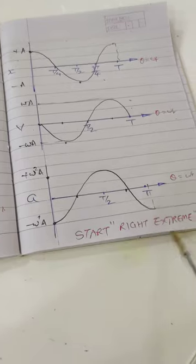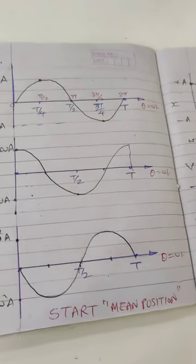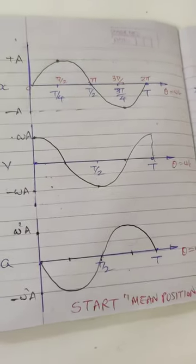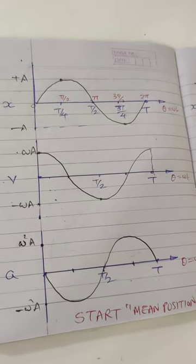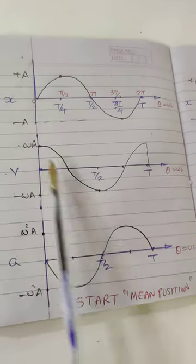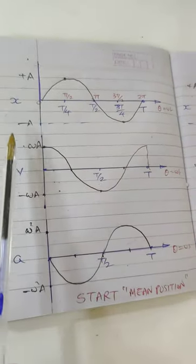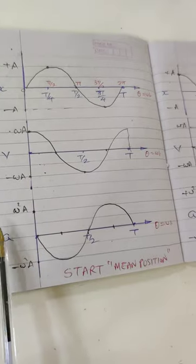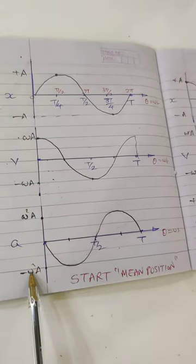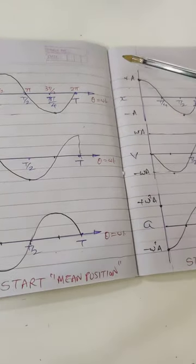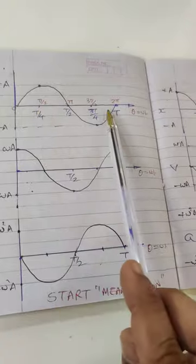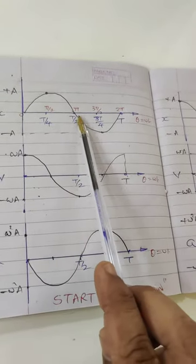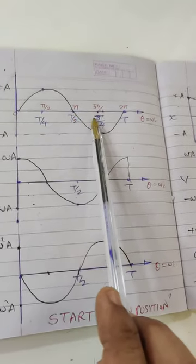First, the names and values on the axes: displacement is +a and -a, velocity is ωa and -ωa maximum, acceleration is ω²a and -ω²a. Time is divided into four parts: T, T/2, T/4, and 3T/4 — this applies everywhere throughout.